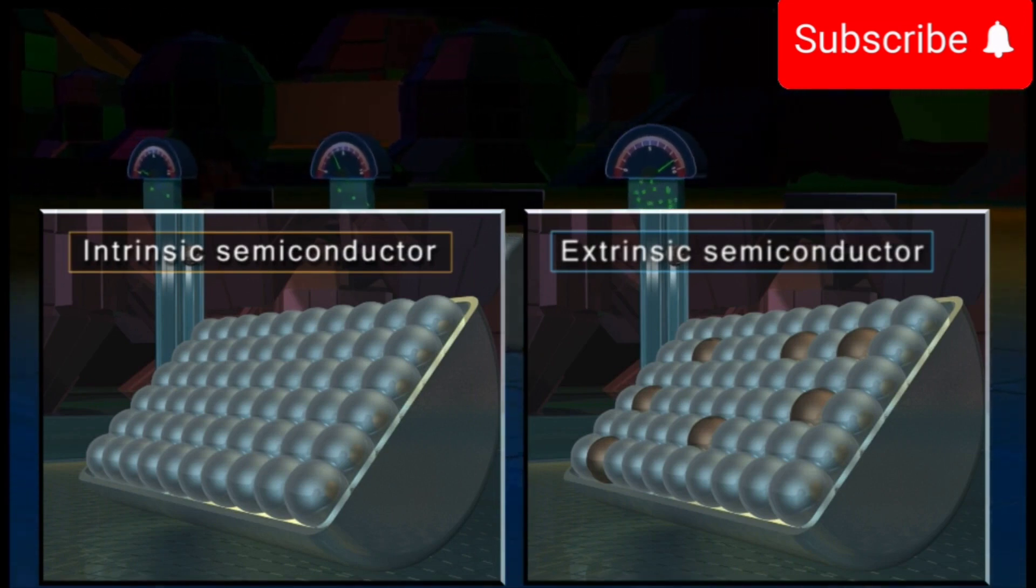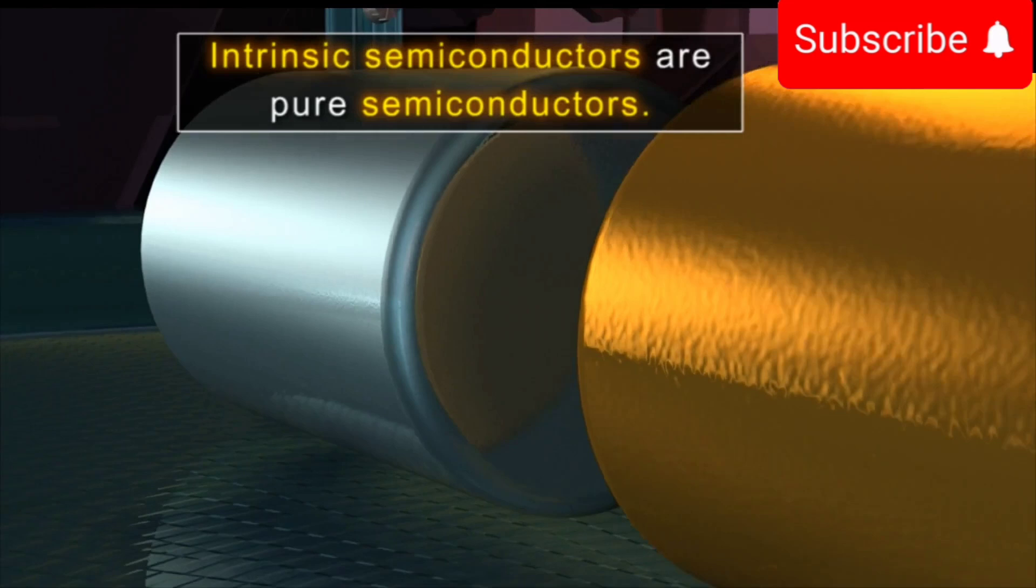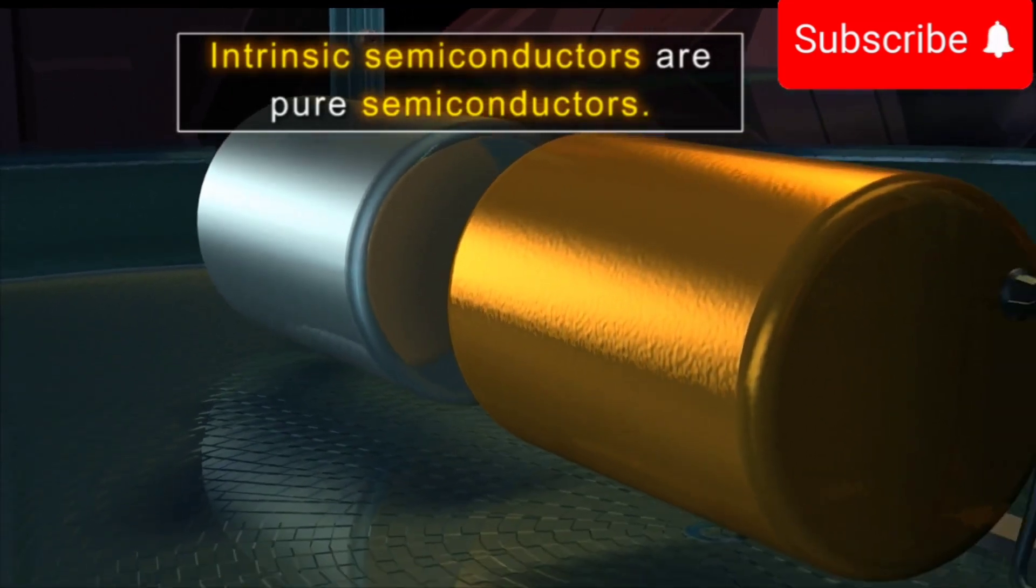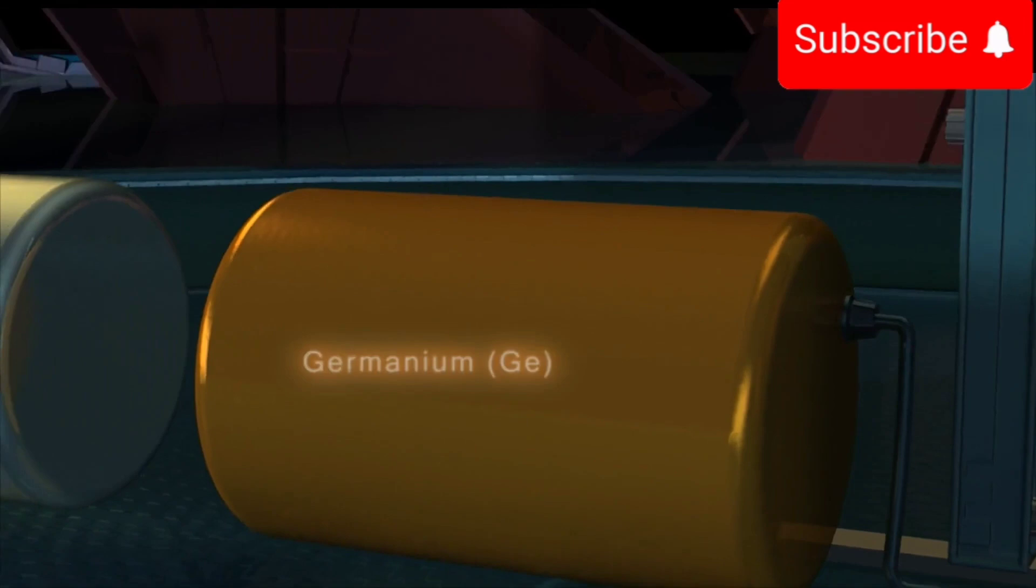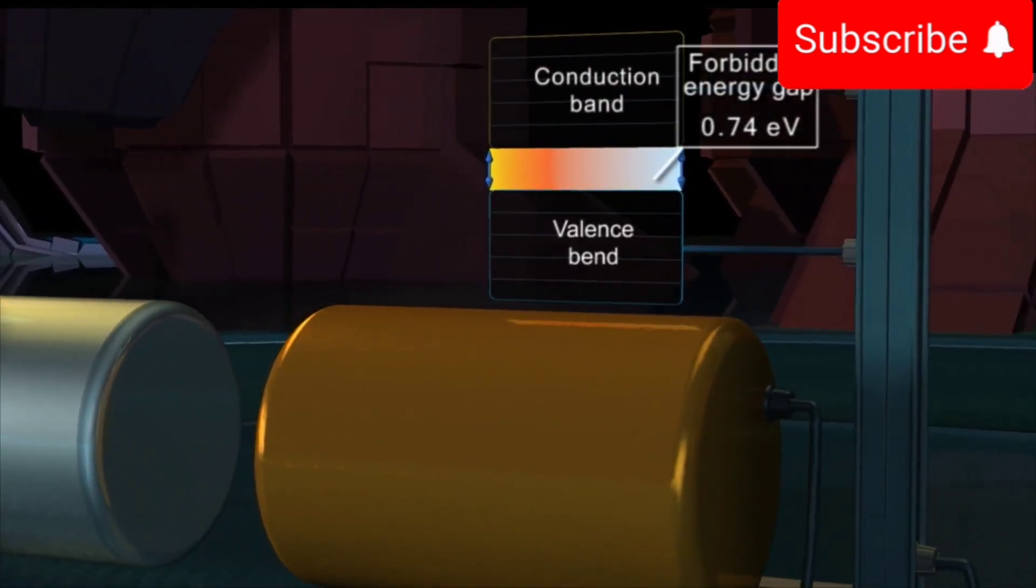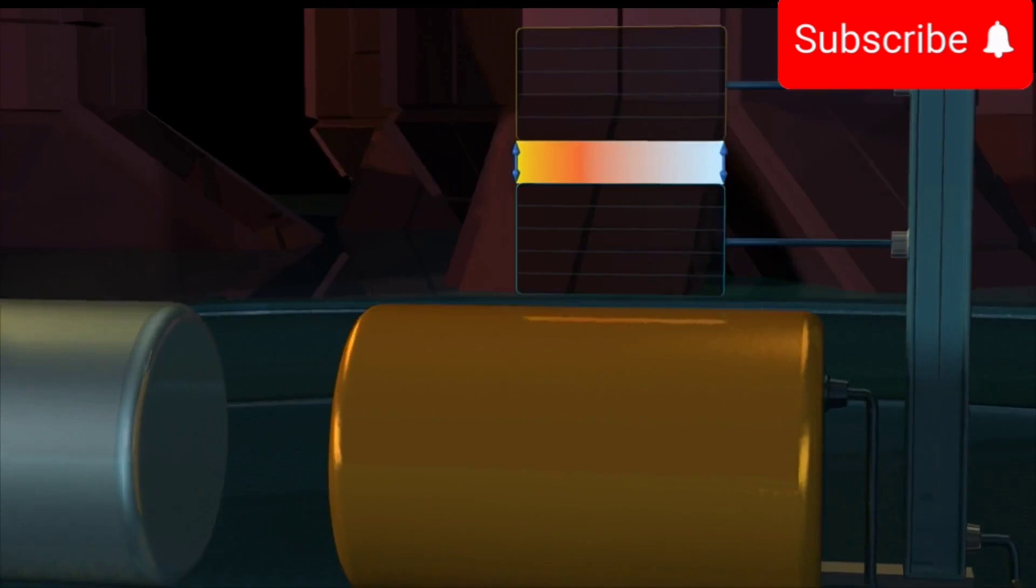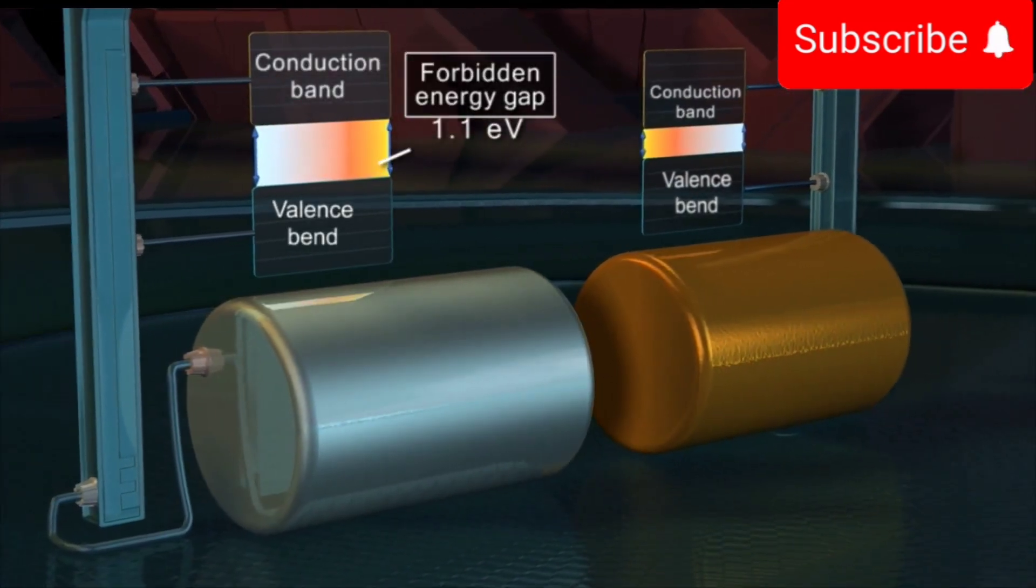First, we shall learn about intrinsic semiconductors. Intrinsic semiconductors are pure semiconductors. The common examples of intrinsic semiconductors are Germanium (Ge) with a forbidden energy gap of 0.74 electron volts and Silicon (Si) with a forbidden energy gap of 1.1 electron volts.